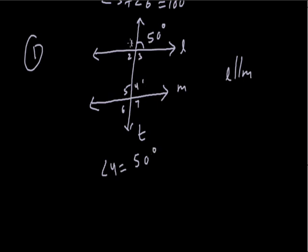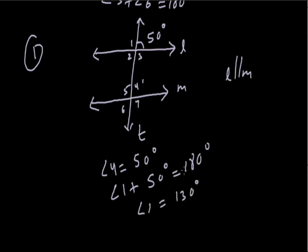Angle 1 and 50° lie on a straight line, so they form a linear pair. Therefore angle 1 + 50° = 180°, giving angle 1 = 130°. Since angles 1 and 5 are corresponding angles, angle 5 is also 130°.